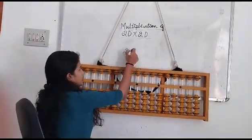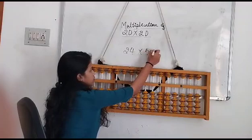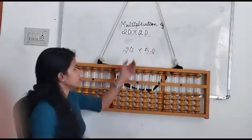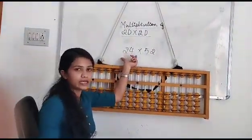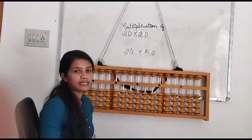I will take an example of 24 multiplied with 52. In this question, 24 is the multiplicand and 52 is the multiplier.